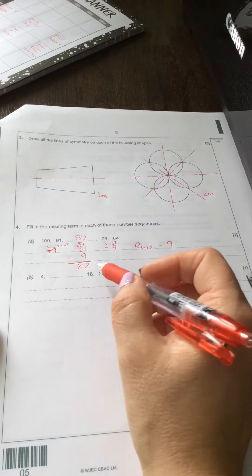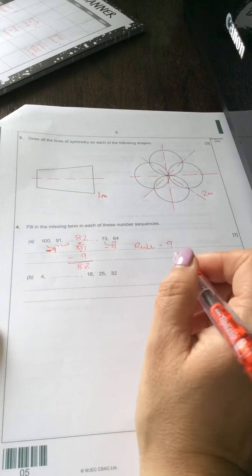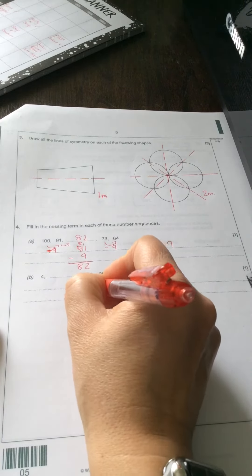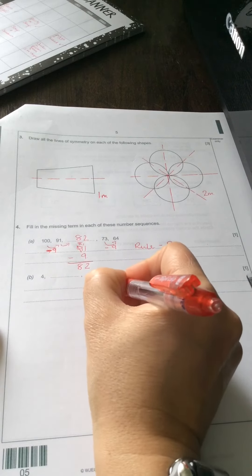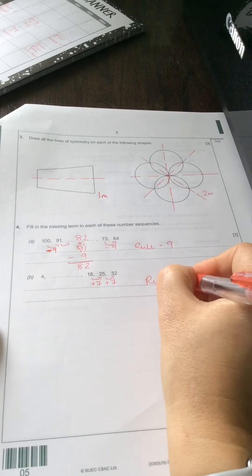Let's have a look at the next one. I'm going to see if there's an addition going on here. So to get from 18 to 25, I would add 7. To get from 25 to 32 is also an add 7. So the rule for this pattern is add 7.